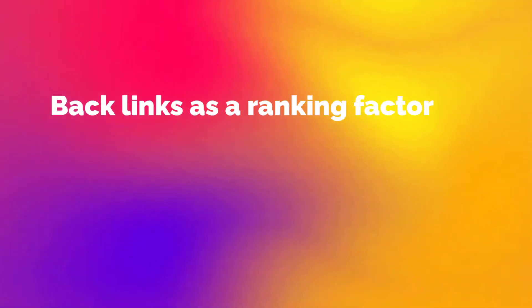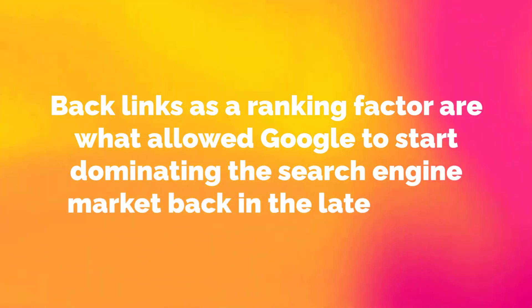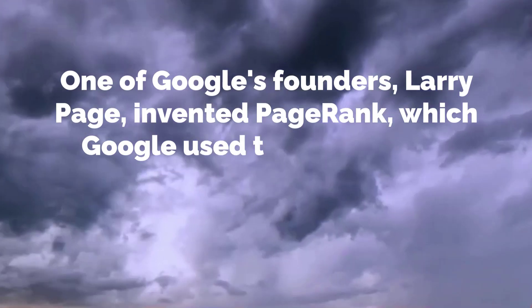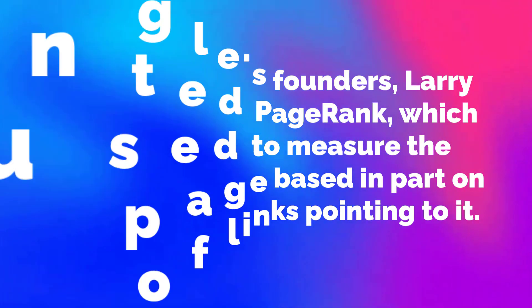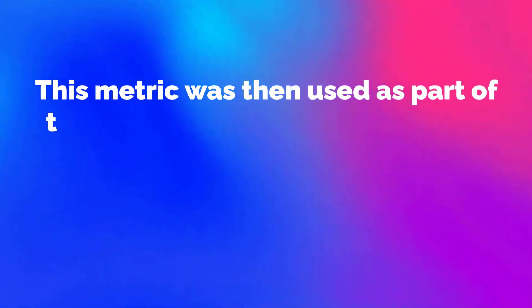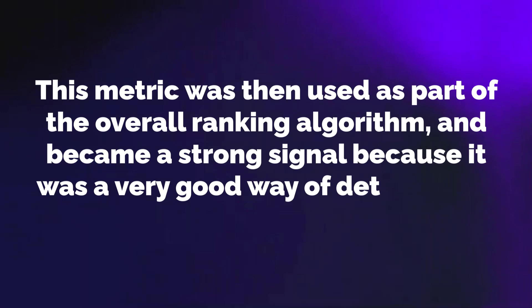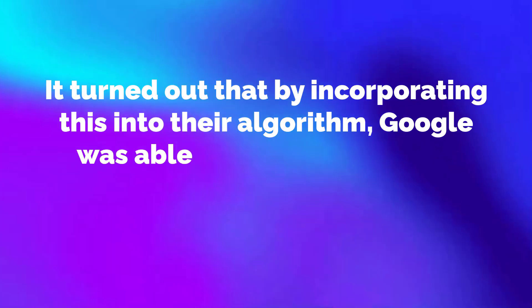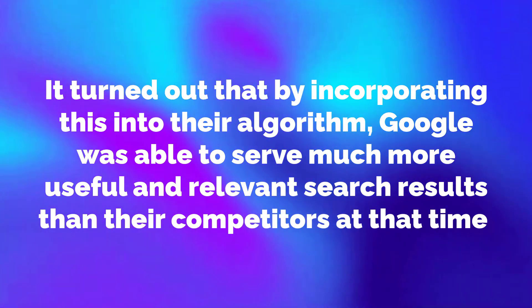Backlinks as a ranking factor are what allowed Google to start dominating the search engine market back in the late 1990s. One of Google's founders, Larry Page, invented PageRank, which Google used to measure the quality of a page based in part on the number of links pointing to it. This metric was used as part of the overall ranking algorithm and became a strong signal because it was a very good way of determining the quality of a website page. It turned out that by incorporating this into their algorithm, Google was able to serve much more useful and relevant search results than their competitors at that time.